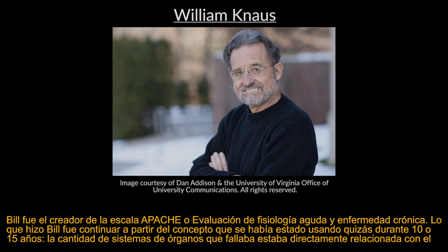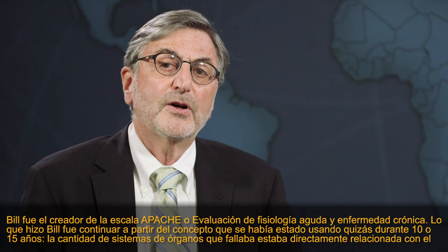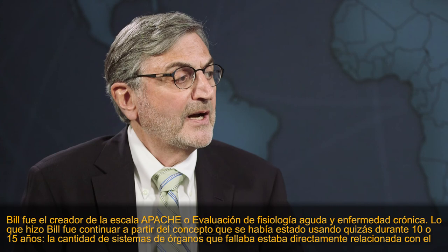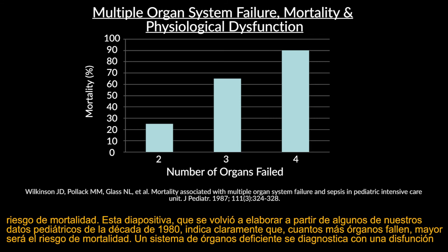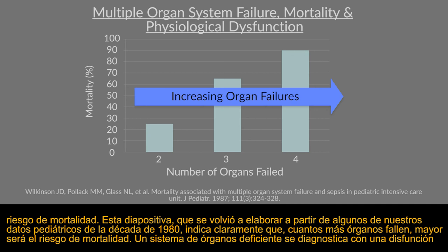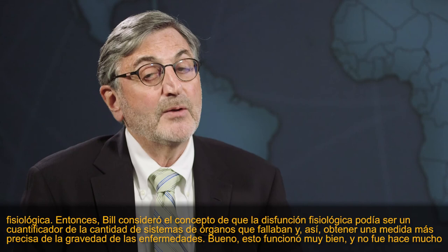Getting to the modern era, I give credit to Bill Knauss at George Washington University for developing the modern-day approach to severity of illness assessment. Bill was the originator of the Apache score, or Acute Physiology and Chronic Health Evaluation. What Bill did was take on the concept — around for maybe 10 or 15 years — that the number of organ systems that had failed was directly related to mortality risk. This slide, redrawn from pediatric data from the 1980s, clearly indicates that the more organs that have failed, the higher the mortality risk.